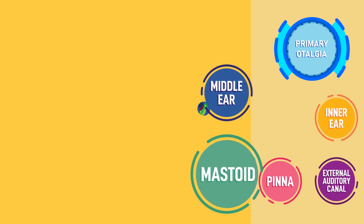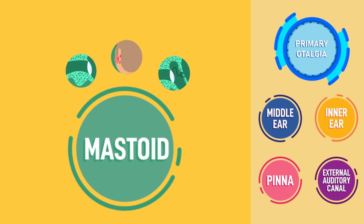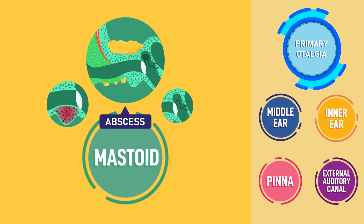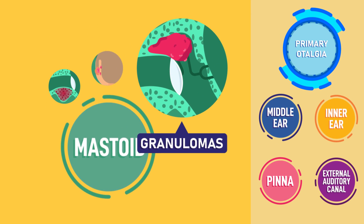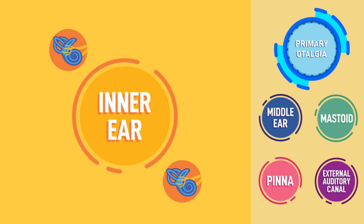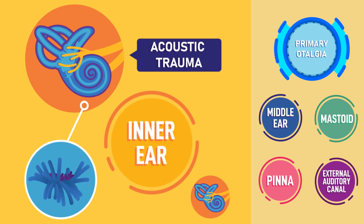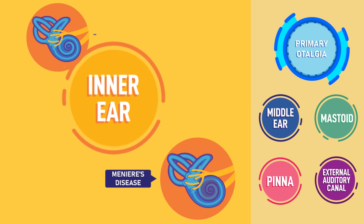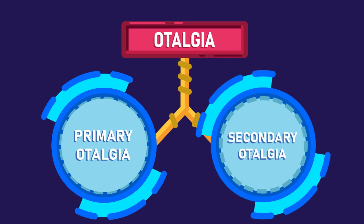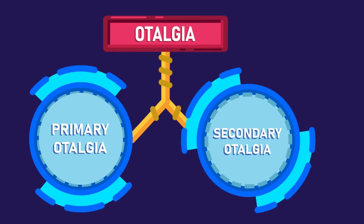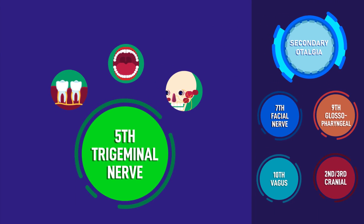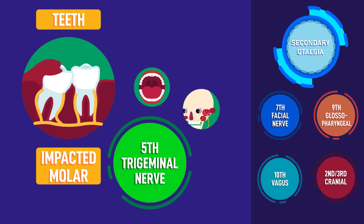In the mastoid, causes can include mastoiditis, abscess, and granular mass. In the inner ear, causes can include acoustic trauma and Meniere's disease. For secondary earache or referred pain, the major nerves involved are: the fifth or trigeminal nerve, which carries pain to the ear from the teeth, oral cavity, or temporomandibular joint.